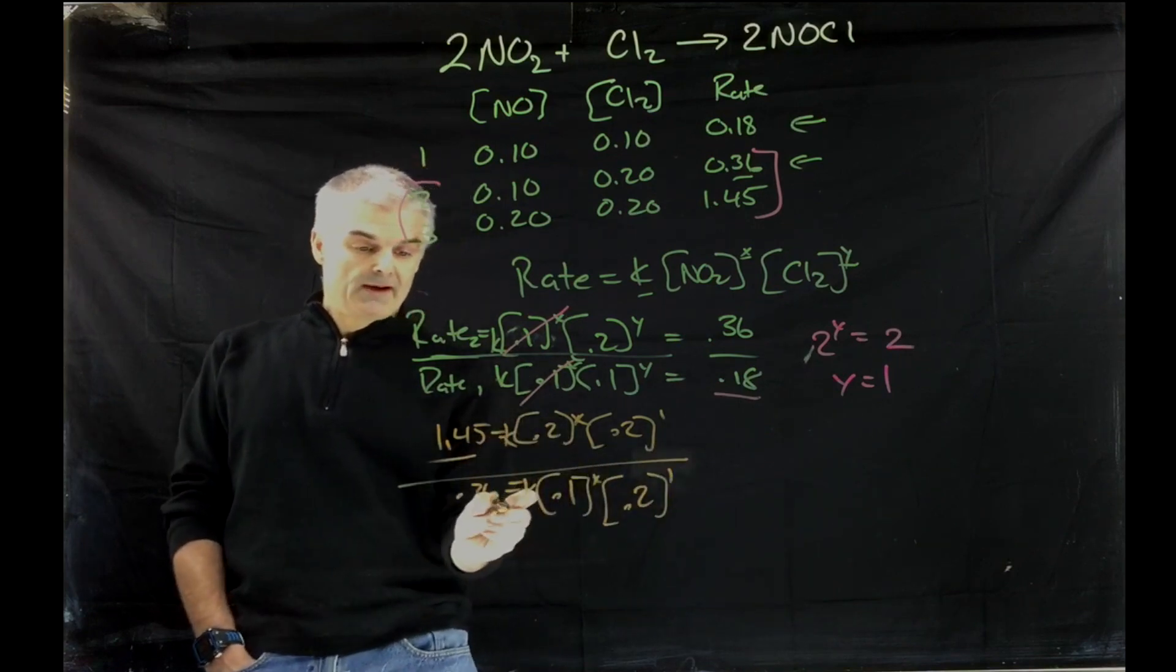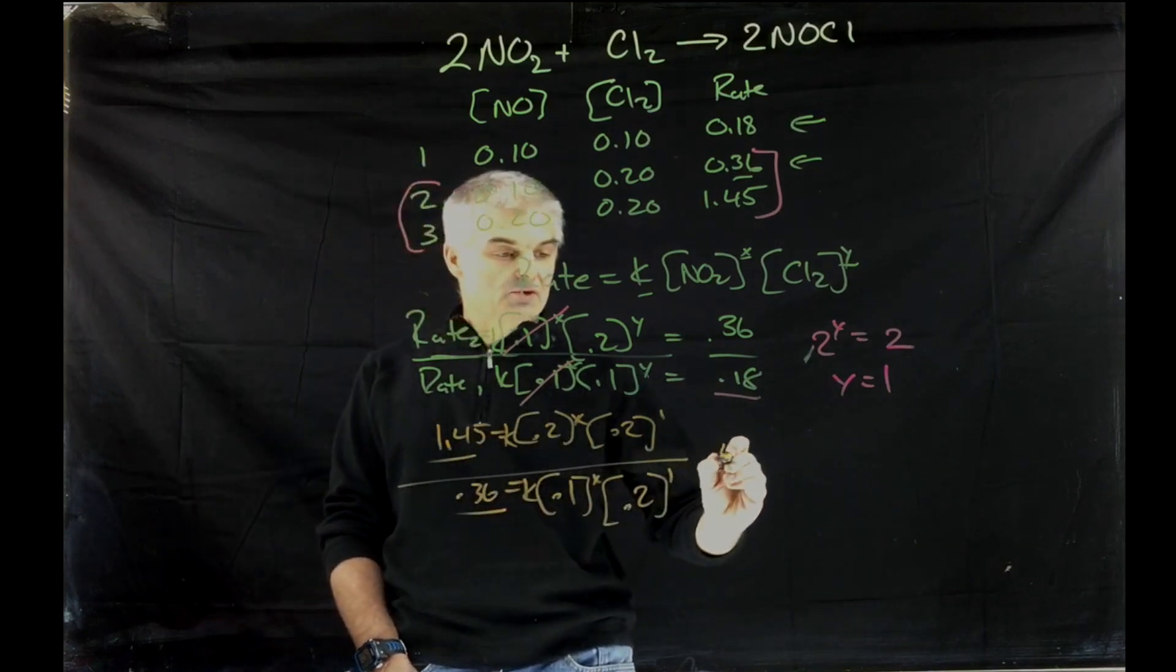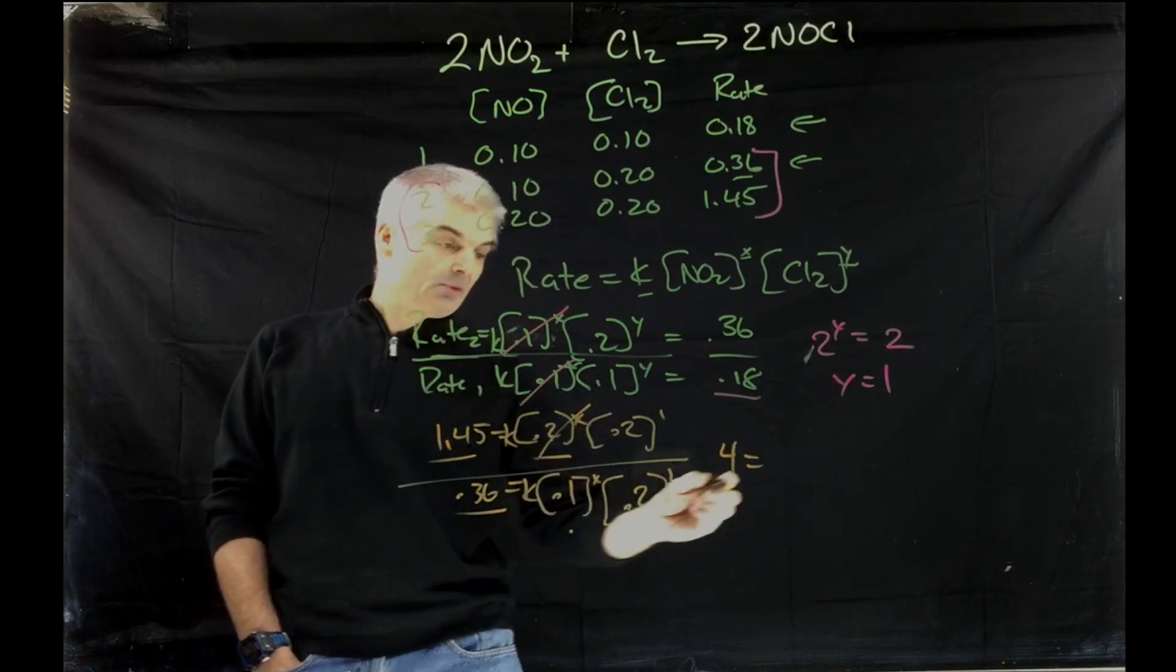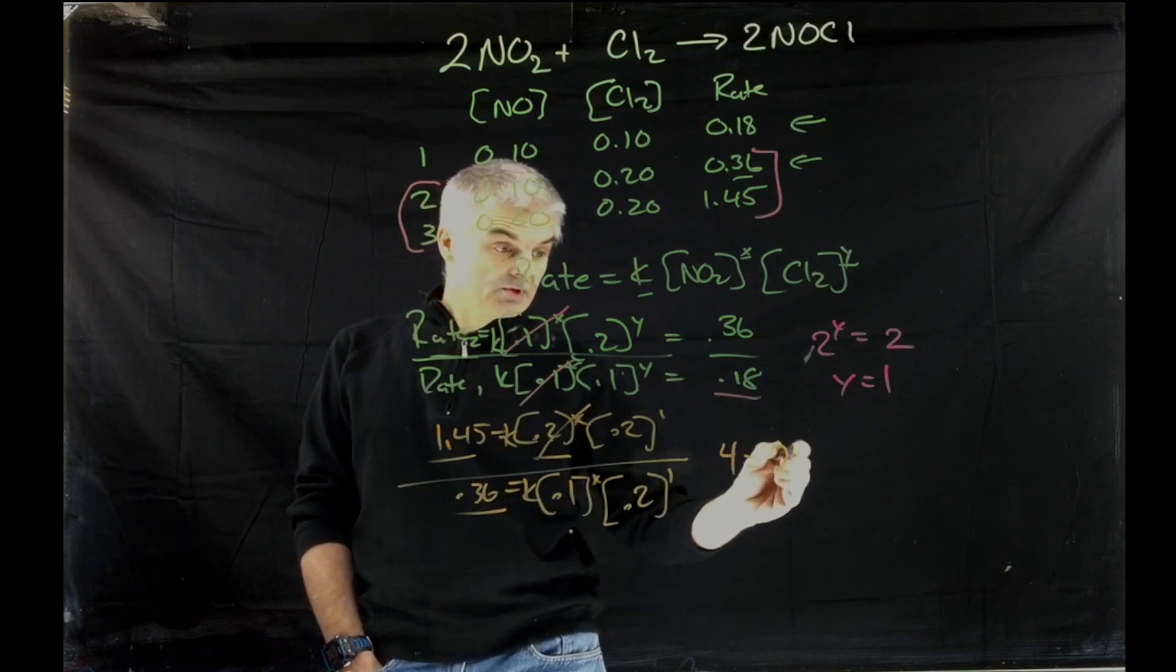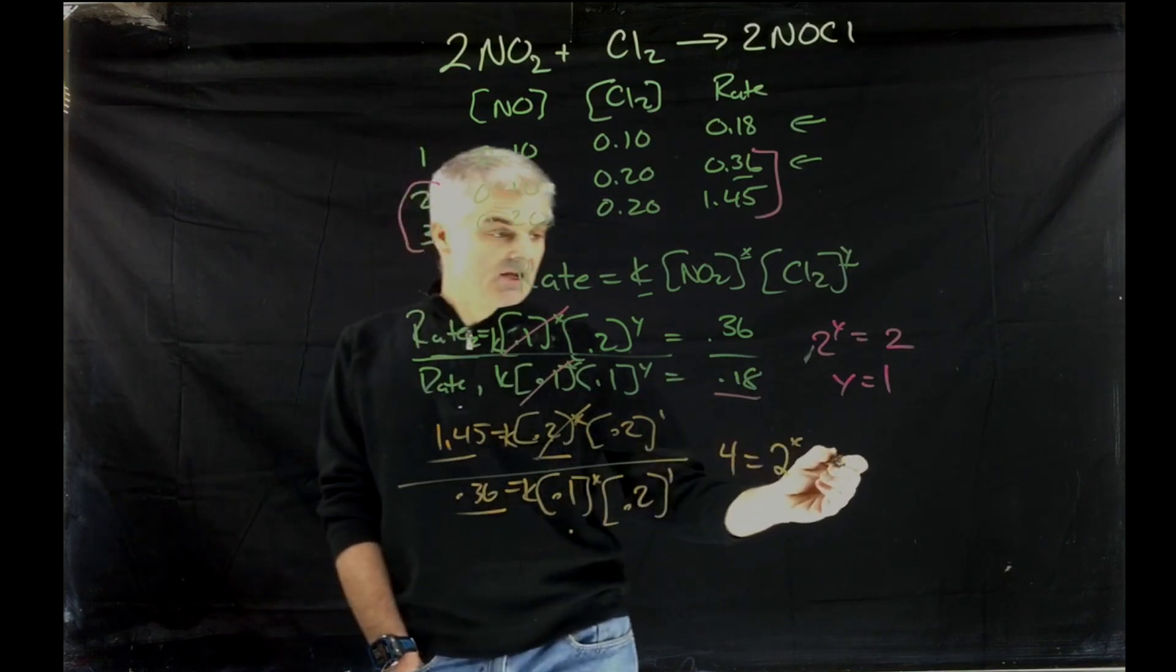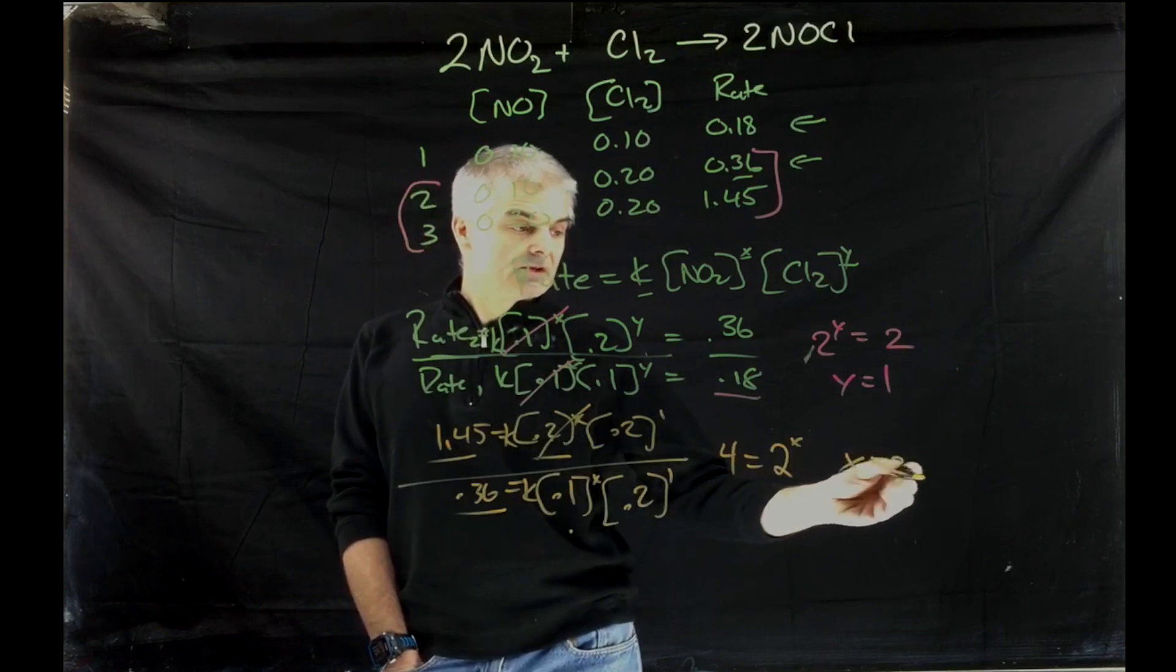1.45 divided by .36 is 4, so 4 is equal to, and if you take .2 divided by .1 is going to be 2 to the x. So, of course, 2 squared is x, so we now know x equals 2.